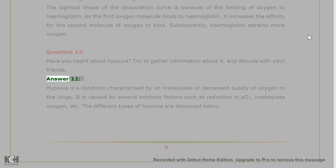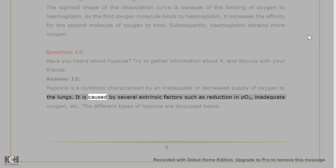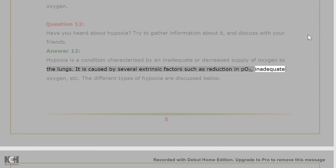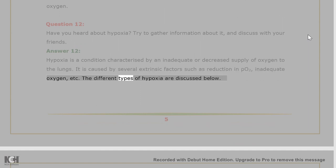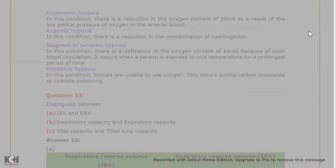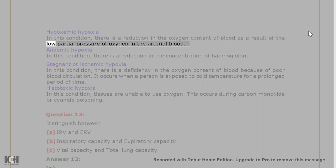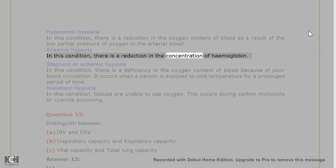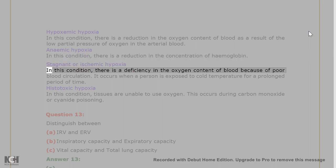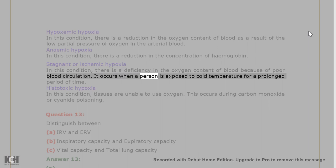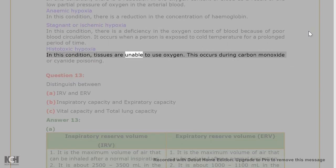Question 12: What is hypoxia? Answer 12: Hypoxia is a condition characterized by an inadequate or decreased supply of oxygen to the lungs, caused by several extrinsic factors such as reduction in pO2 or inadequate oxygen. Types of hypoxia: (1) Hypoxemic hypoxia — reduction in oxygen content of blood due to low partial pressure of oxygen in arterial blood. (2) Anemic hypoxia — reduction in concentration of hemoglobin. (3) Stagnant or ischemic hypoxia — deficiency in oxygen due to poor blood circulation, occurring when exposed to cold temperatures for prolonged periods. (4) Histotoxic hypoxia — tissues are unable to use oxygen, occurring during carbon monoxide or cyanide poisoning.